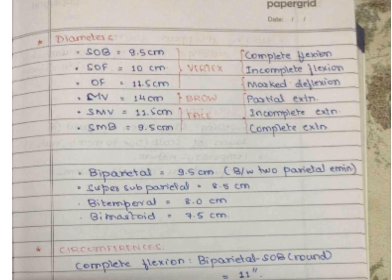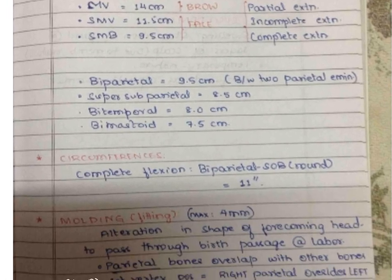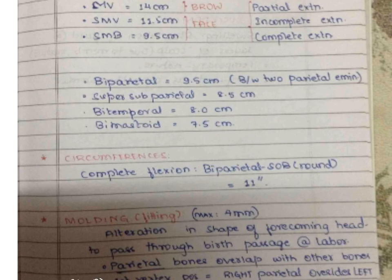There are four circumferences. The most important is at complete flexion, measured at the suboccipitobregmatic plane, which is 11 inches or 27.5 cm. In the flexed attitude the circumference is 13.5 inches. In incomplete extension it is 15 inches, and in complete extension it is 11 inches.